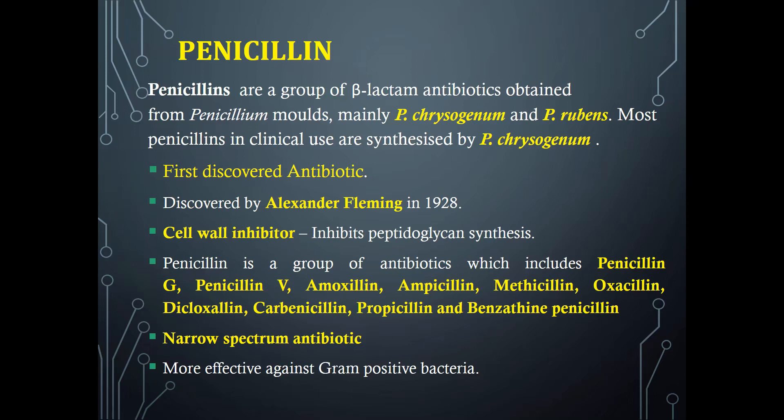Regarding the mode of action of penicillin, it acts as a cell wall inhibitor — it inhibits the peptidoglycan synthesis in bacteria. Penicillin is a group of antibiotics which includes penicillin G, penicillin V, amoxicillin, ampicillin, methicillin, etc. These are some penicillin derivatives. It is a narrow spectrum antibiotic that is able to kill or inhibit certain species of bacteria. Penicillin is more effective against gram-positive bacteria and less effective against gram-negative bacteria.